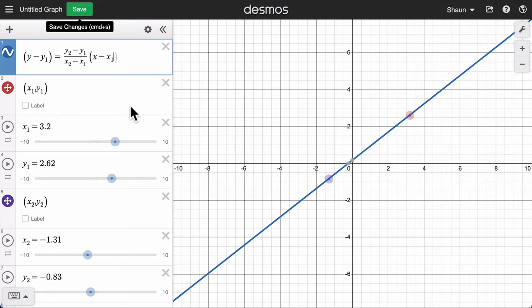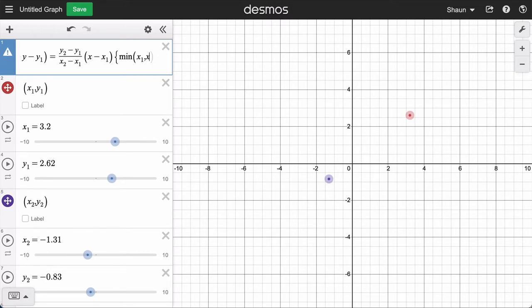We talked in the midpoint challenge about restricting the domain here with the min function. We want to go from whichever point has a smaller X value, min of X1, X2.